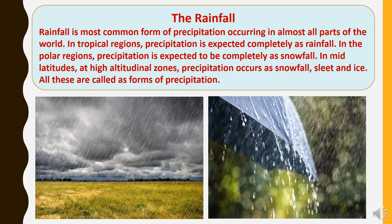In mid-latitudes, at high altitudinal zones, precipitation occurs as snowfall, sleet, and ice. All these are called forms of precipitation.